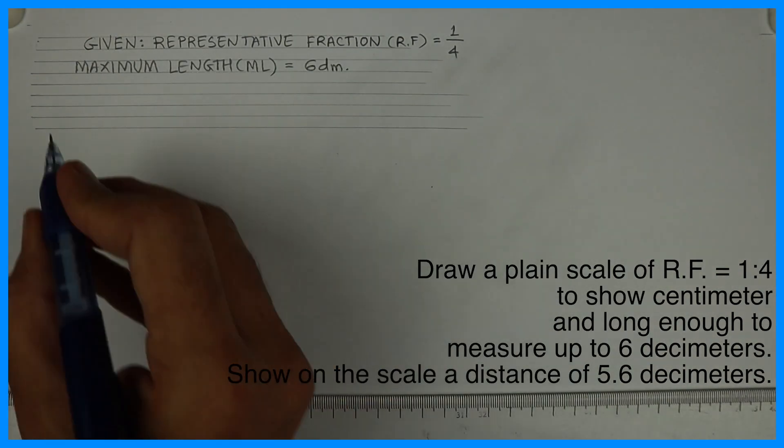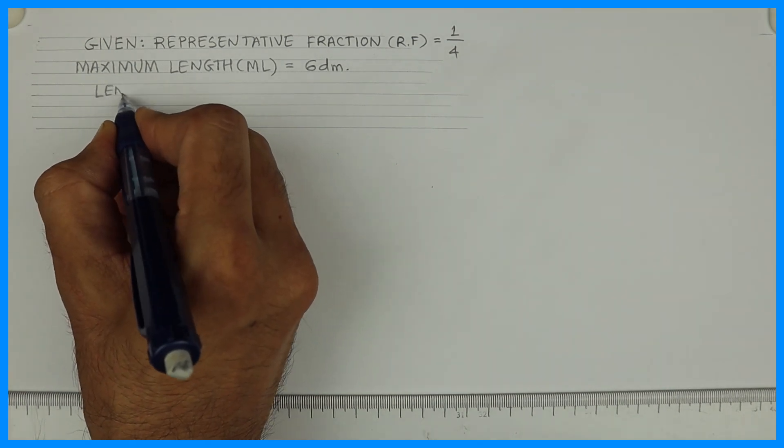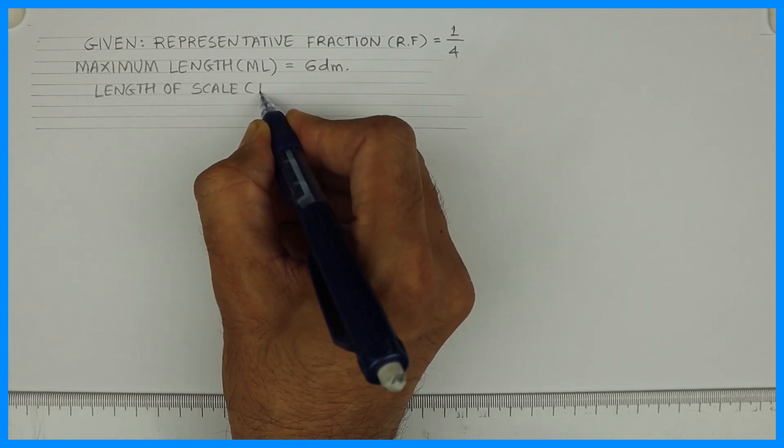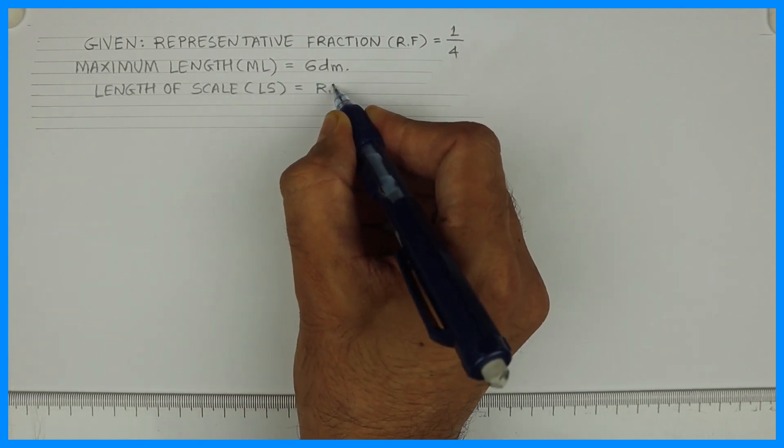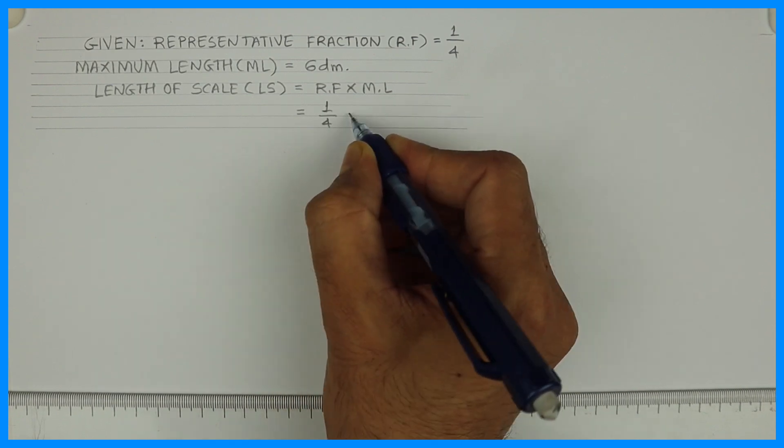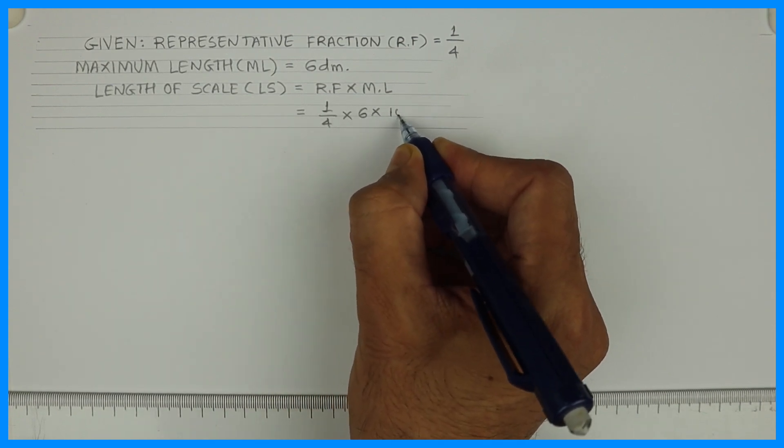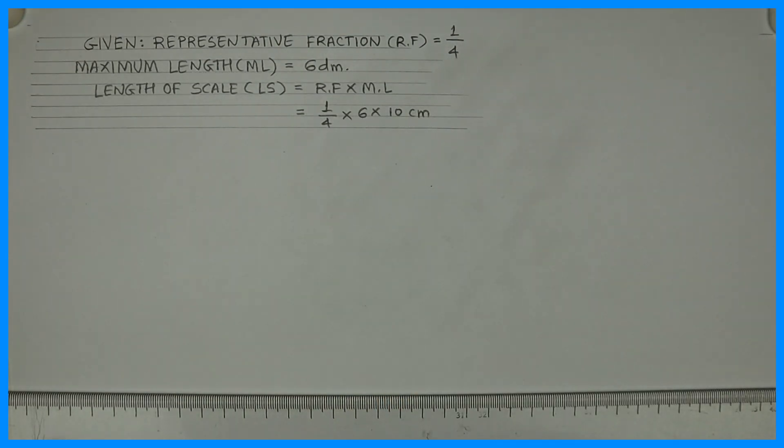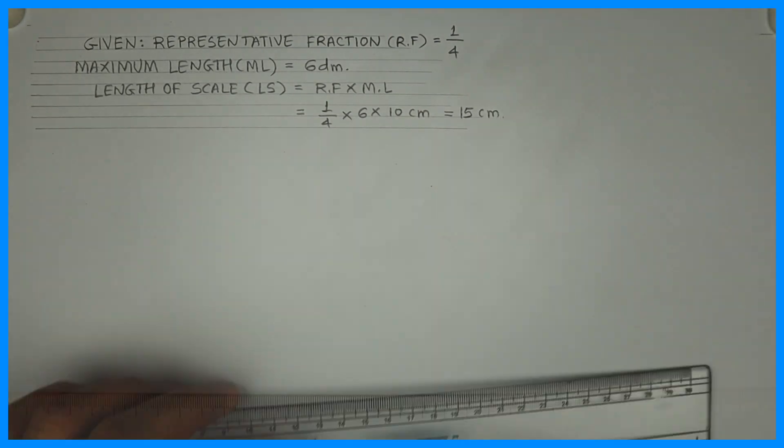Now we have a formula. Length of scale which is LS equals to RF into ML. RF is 1 upon 4, ML is 6 decimeter. Multiply by 10 will give you centimeter. So when you solve this you will get 15 centimeter.